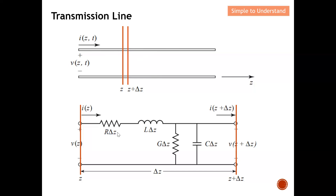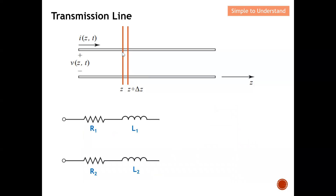Because of this small-section approach, we are able to use lumped elements to represent the transmission line and apply Kirchhoff's Voltage Law and Kirchhoff's Current Law for analysis. Here you can see we define position z and z + Δz. I'll now explain how to derive the lumped element schematic to represent a small section of the transmission line.